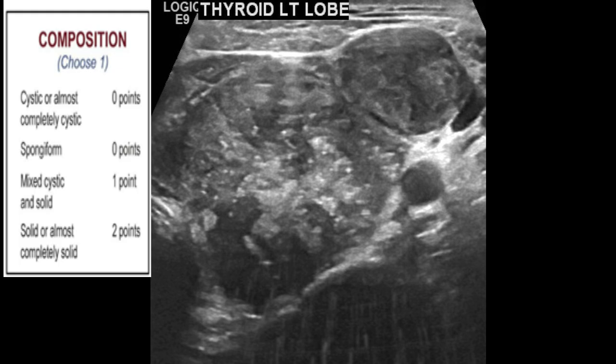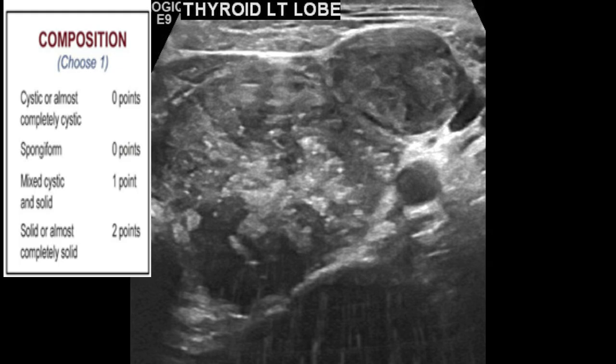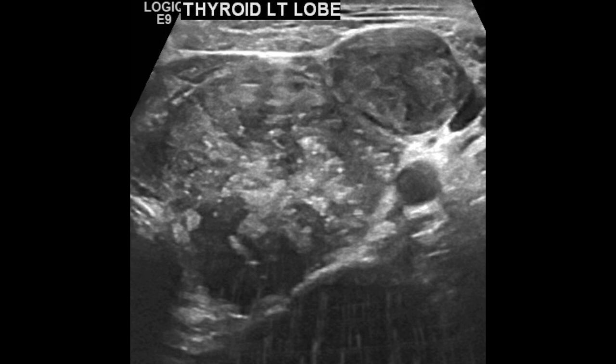First, we start with the composition of the nodule. Here we have a solid nodule, so we will give it two points for being solid. The second category is echogenicity.